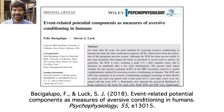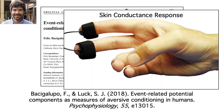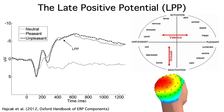To make this concrete, we'll go through the actual methods and results sections of a paper from my lab as we cover each step of the process. I've chosen a study conducted by Felix Baci-Galupo several years ago when he was a grad student in my lab. The goal of the study was to see whether ERPs could be used to assess aversive conditioning. For decades, researchers have studied aversive conditioning using the skin conductance response, which is related to the sweaty palms you get when you're nervous. Felix thought the late positive potential of the ERP waveform might also be a useful measure of aversive conditioning, directly measuring brain activity rather than secondary changes in the skin.